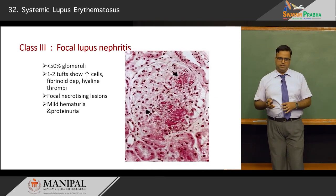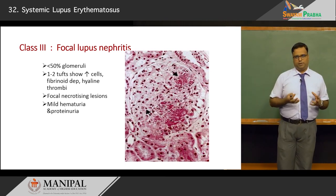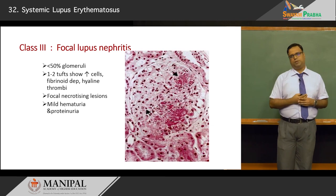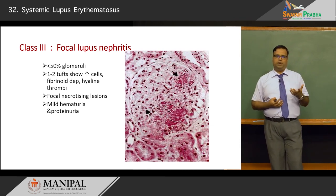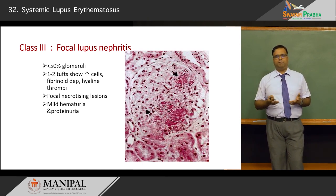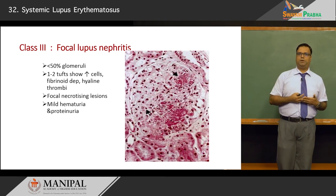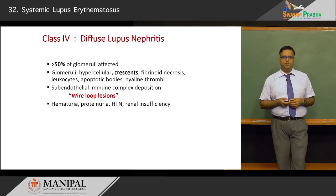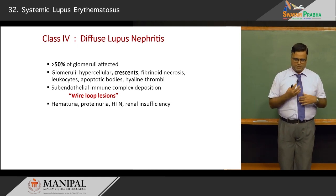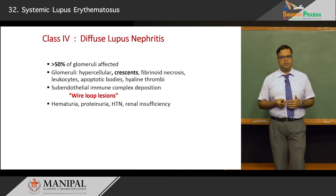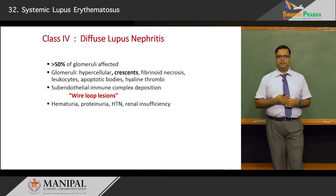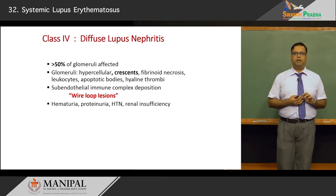Class 3 is focal lupus nephritis, where less than 50 percent of glomeruli in cross-section are involved. The affected tufts show increased fibrinoid deposits and small hyaline thrombi within capillary lumens, with more prominent hematuria and proteinuria. Class 4 is diffuse lupus nephritis, where more than 50 percent of glomeruli are affected. Glomeruli become hypercellular, developing crescents — sometimes called crescentic glomerulonephritis — along with fibrinoid necrosis and thrombi. Sub-endothelial immune complex deposits produce the characteristic wire loop lesions typical of diffuse lupus nephritis.